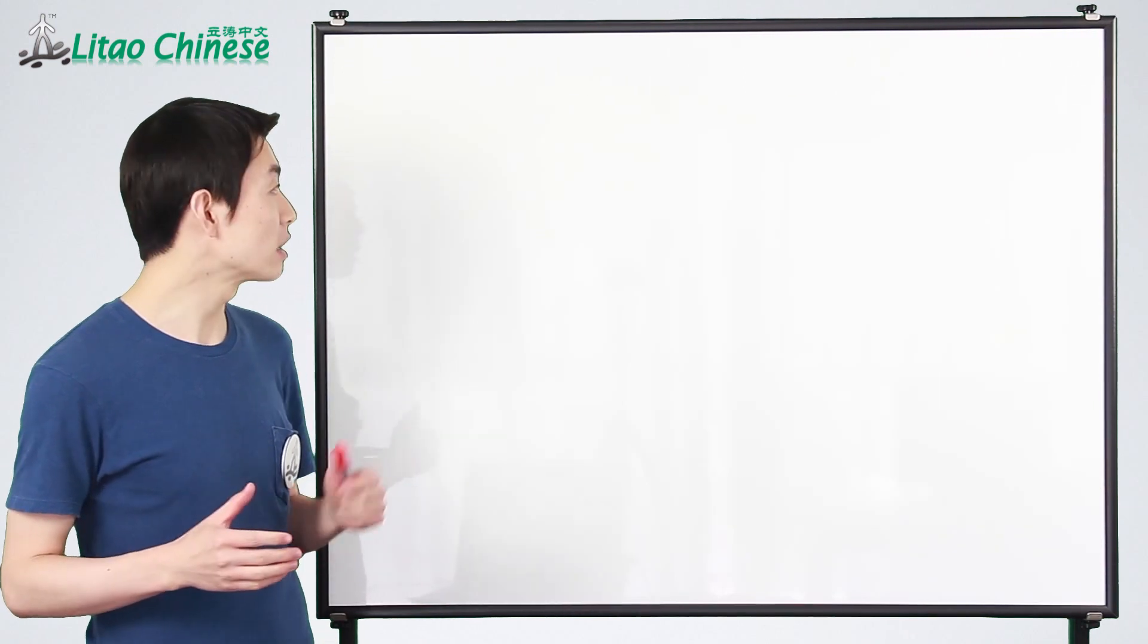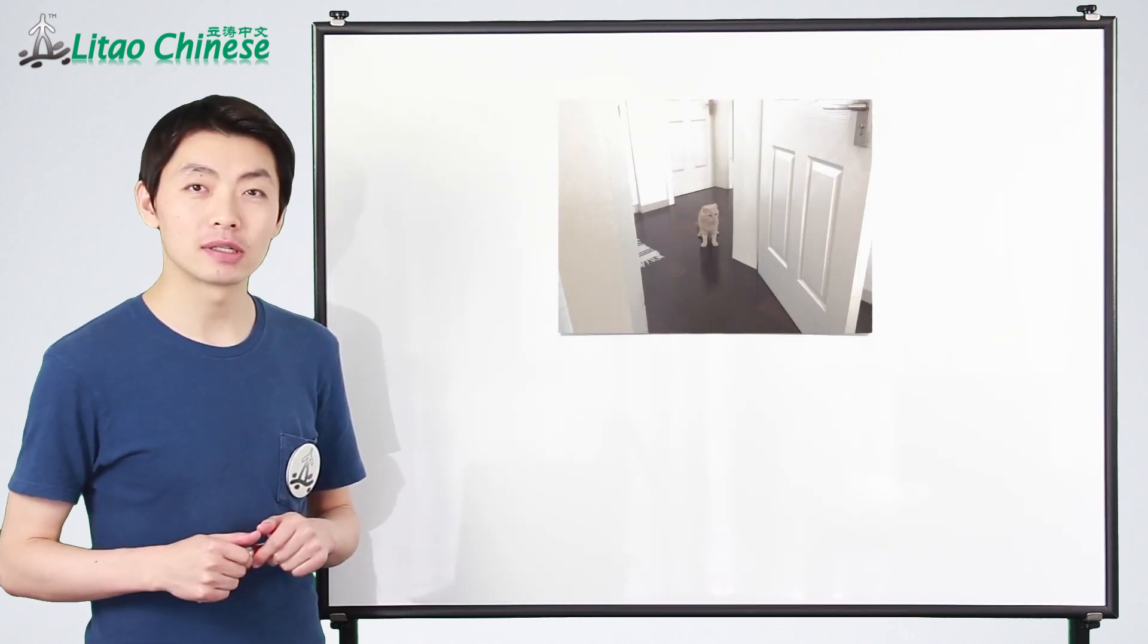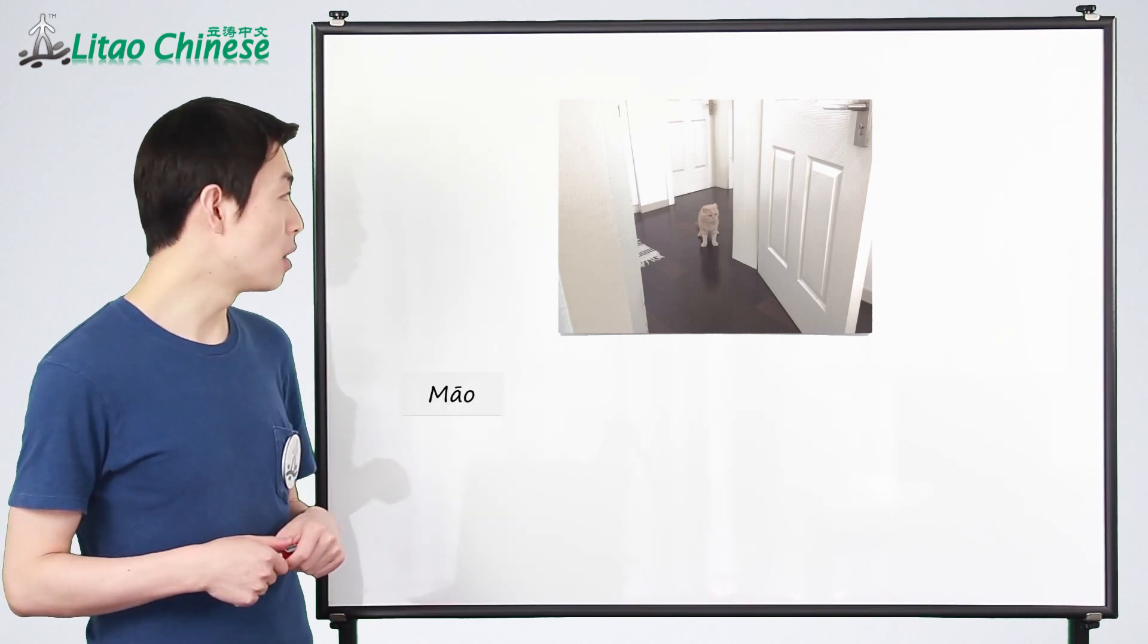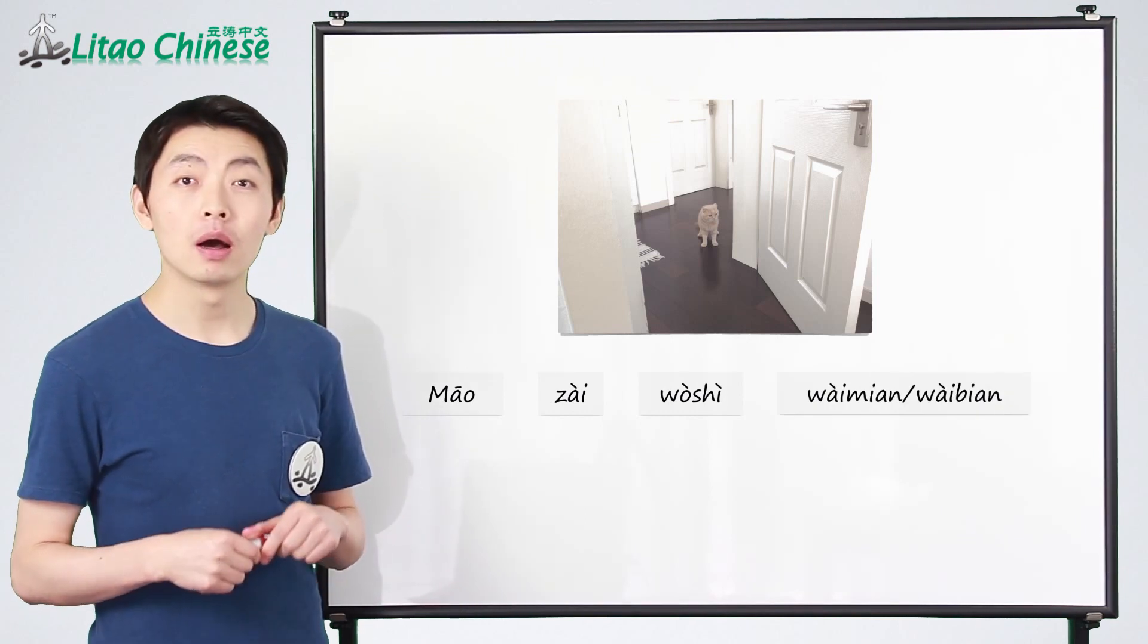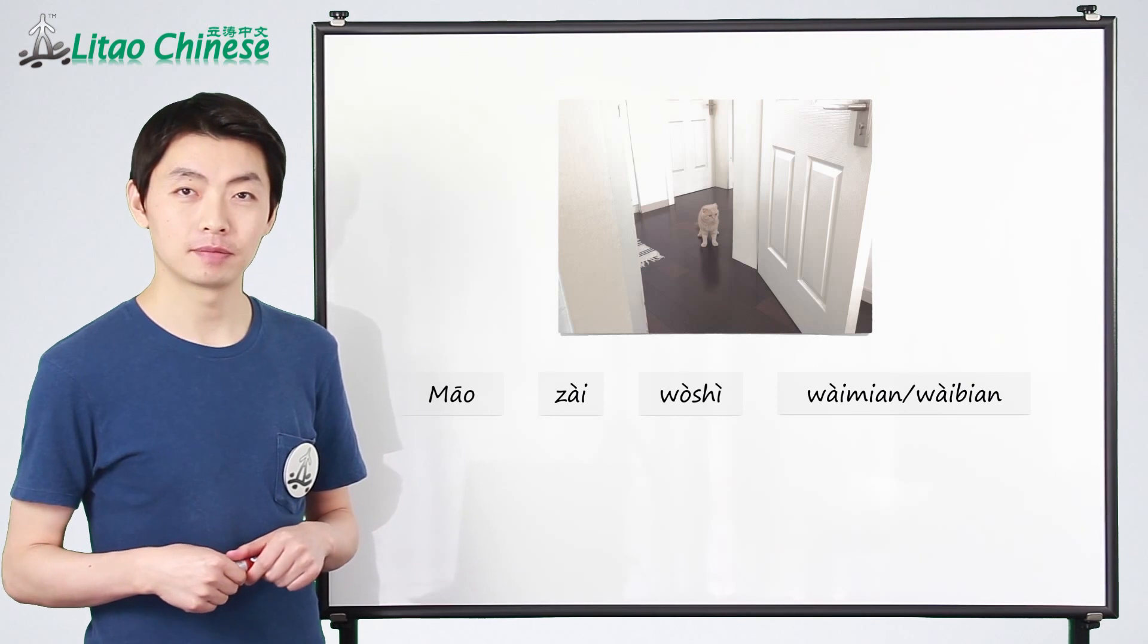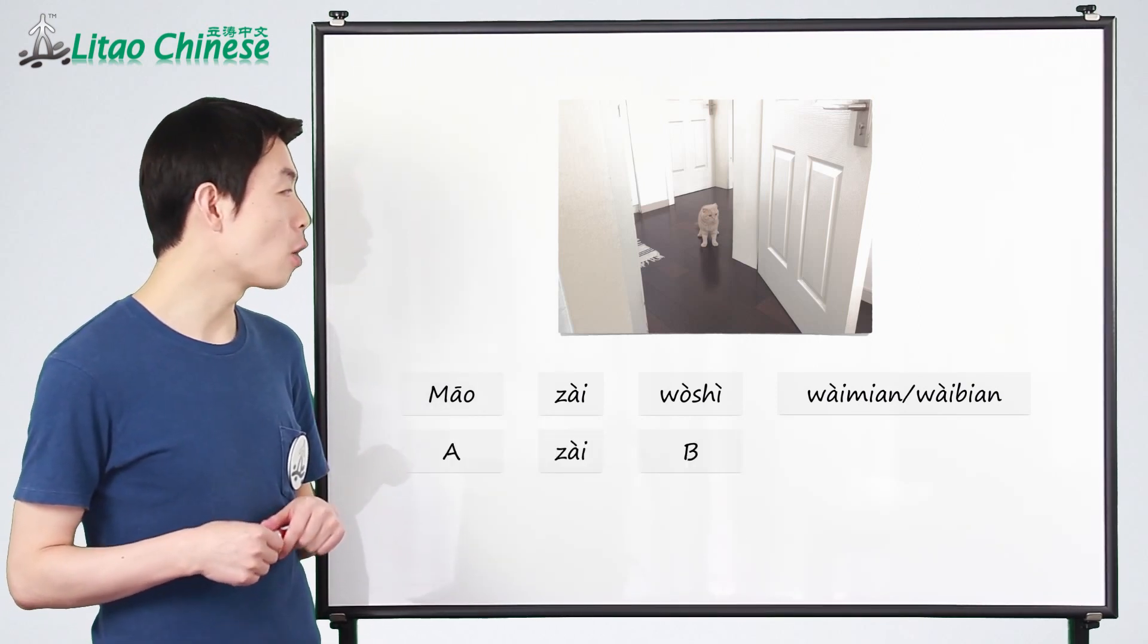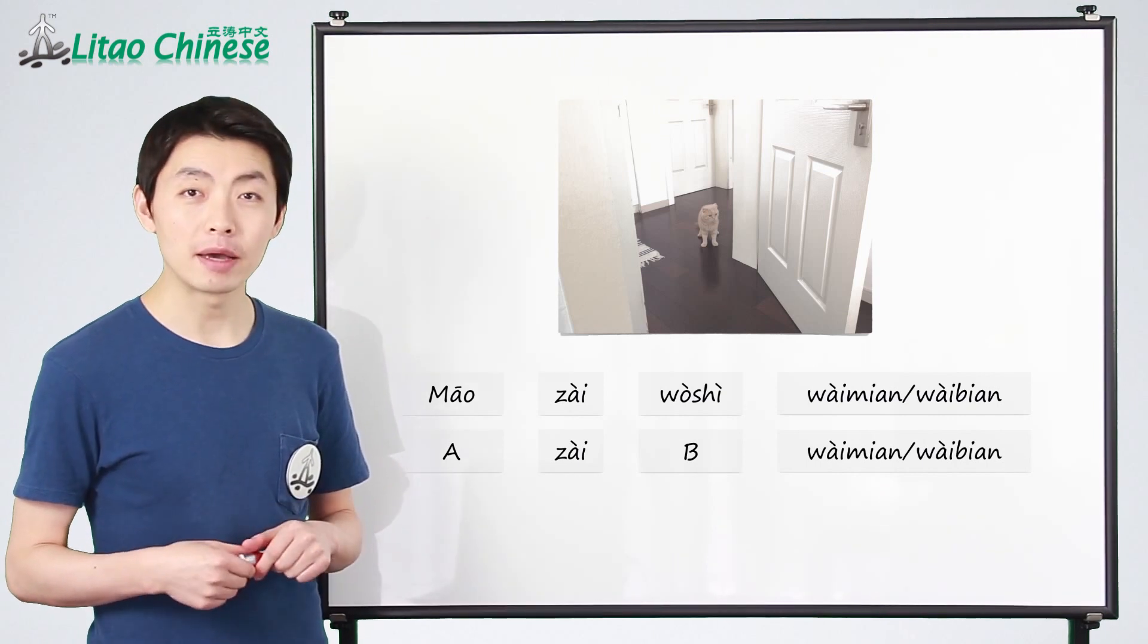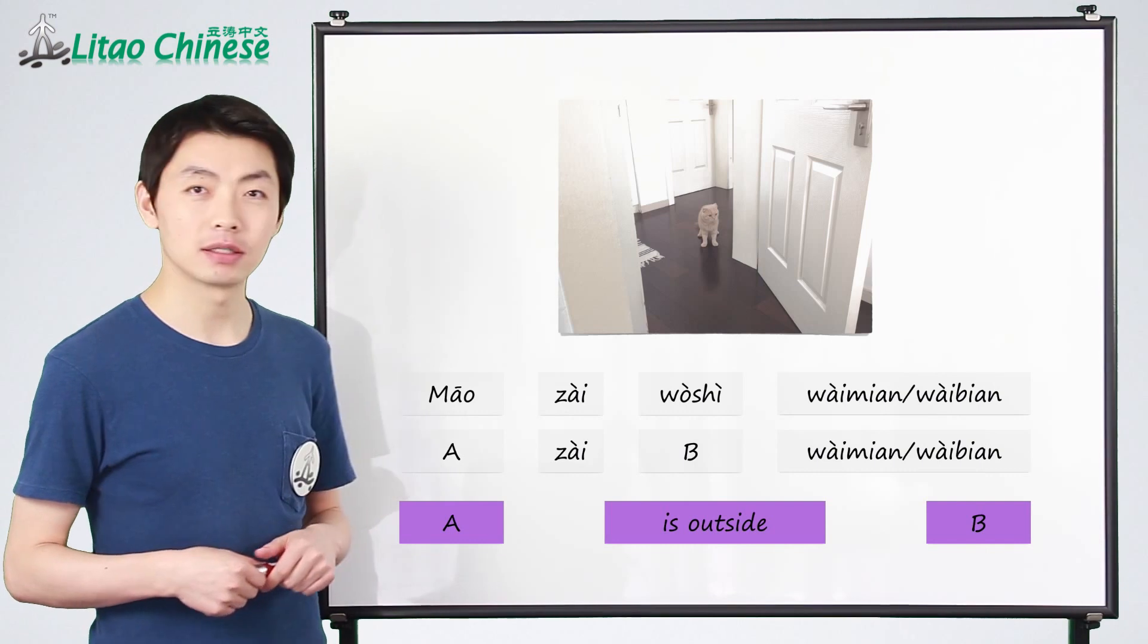And in the fourth picture, the cat is outside the bedroom. We say 猫在卧室外面 or 外边. So the structure A zai bi wai mian or 外边 means A is outside B.